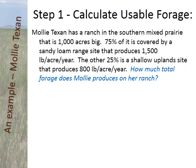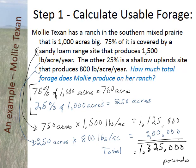With this information, how much total forage does Molly have on her ranch? The 75% portion is 750 acres producing 1,500 pounds per acre, giving 1,125,000 pounds of forage. The shallow site is 250 acres producing 800 pounds per acre, or 200,000 total pounds. So the total forage on the ranch would be 1,325,000 pounds — and these calculations are almost always in dry weight.